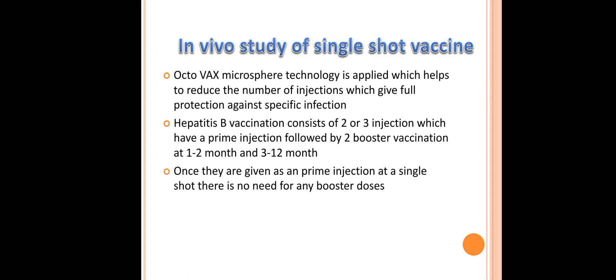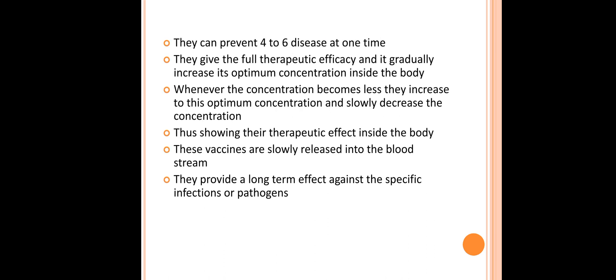In the in vivo study of single shot vaccine, a technology called Octovax Microsphere Technology was applied to reduce the number of injections while providing full protection against specific infections. Hepatitis B vaccination normally consists of two or three injections — a prime injection followed by booster doses at one to two months and three to twelve months. With a single shot prime dose, no booster dose is required. They can prevent four to six diseases at one time, provide full therapeutic efficacy, and gradually maintain optimum concentration inside the body. These vaccines are slowly released into the bloodstream, providing long-term effect against specific infections or pathogens.